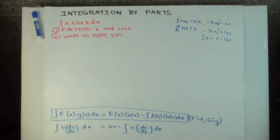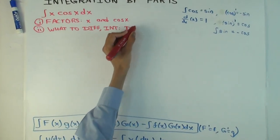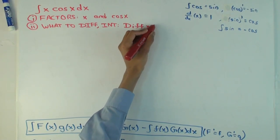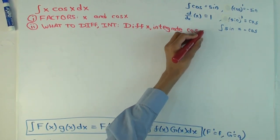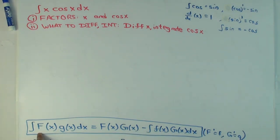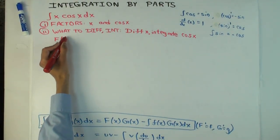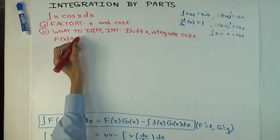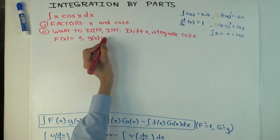Since we haven't yet covered the heuristic to decide what to differentiate, I'll just tell you: the answer is that we differentiate x and integrate cosine x. There's a general strategy to figure out how to decide, but we haven't seen that yet, so just accept this as my wisdom. In the Fg notation, capital F is the part to differentiate, so capital F(x) is x. Little g(x) is the part to integrate, that's cosine x.